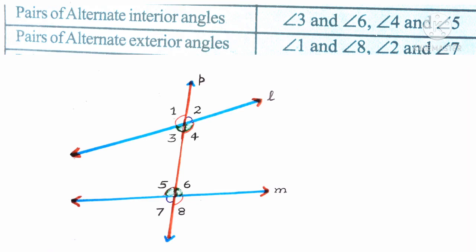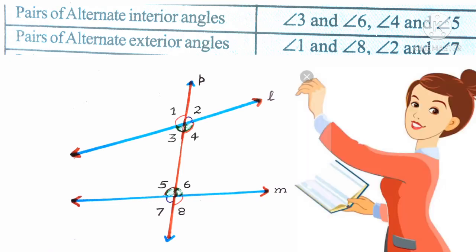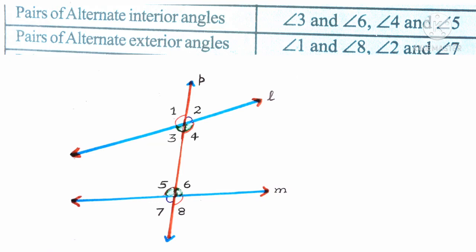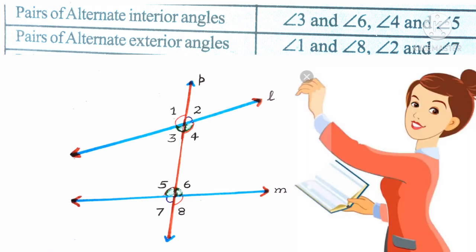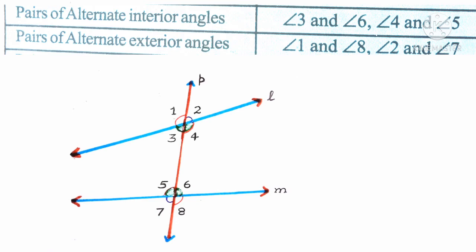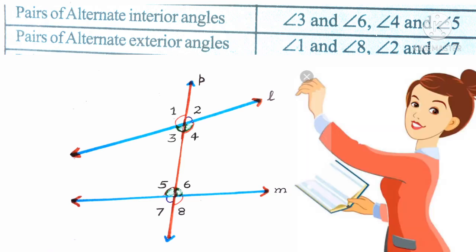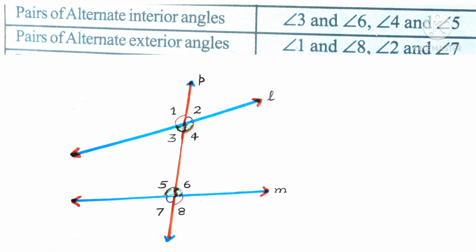Alternate exterior angles. Angles which lie outside those two lines L and M are called exterior angles. Pairs of alternate exterior angles are angle 1 and angle 8, and angle 2 and angle 7. Pairs of interior angles on the same side of the transversal are angle 3 and angle 5, and angle 4 and angle 6.